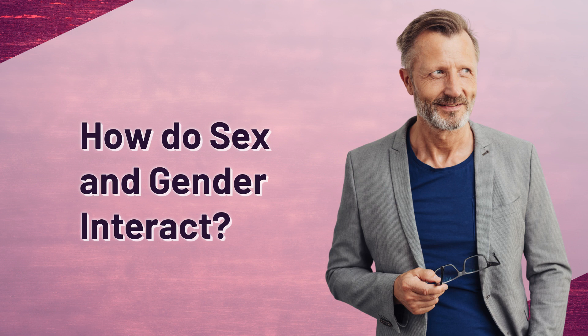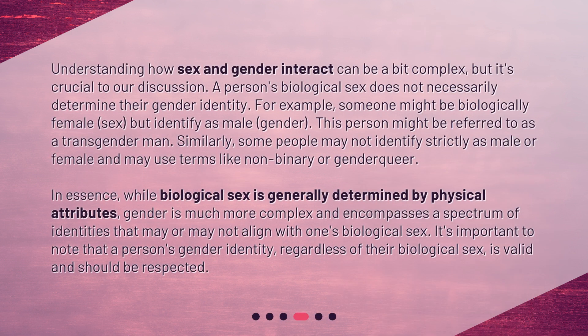How do sex and gender interact? Understanding how sex and gender interact can be a bit complex, but it's crucial to our discussion. A person's biological sex does not necessarily determine their gender identity. For example, someone might be biologically female but identify as male — this person might be referred to as a transgender man. Similarly, some people may not identify strictly as male or female and may use terms like non-binary or genderqueer. In essence, while biological sex is generally determined by physical attributes, gender is much more complex and encompasses a spectrum of identities that may or may not align with one's biological sex.